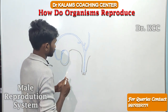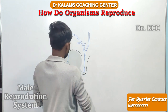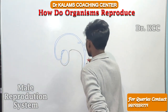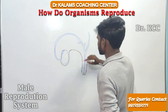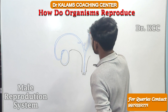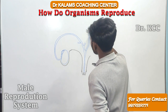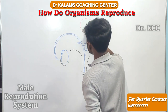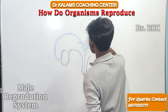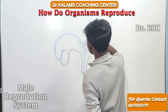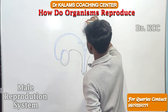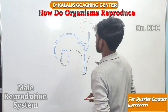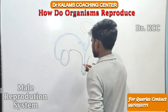This is called the urethra. The urethra is a common passage for sperms as well as for urine. This here is your urinary bladder.